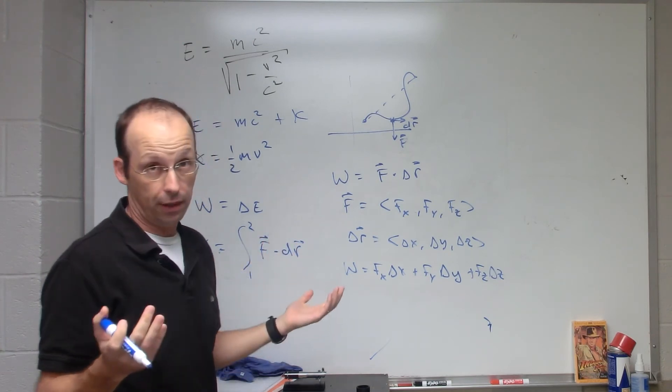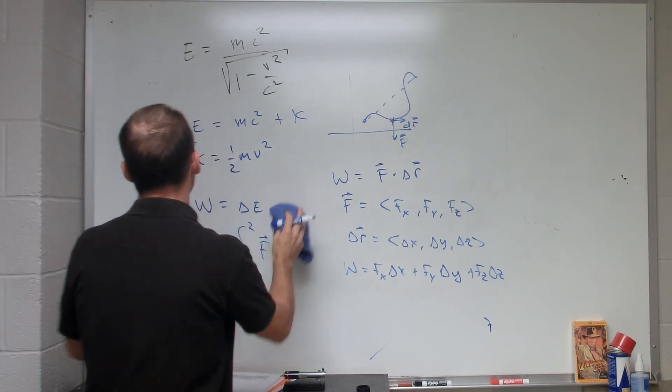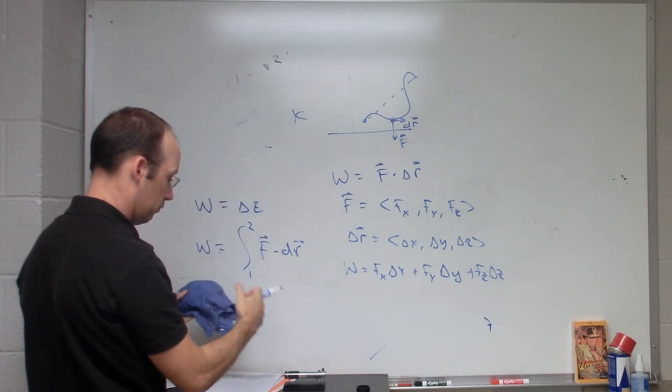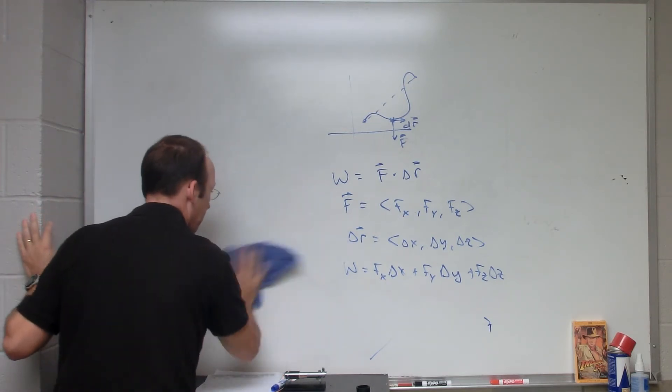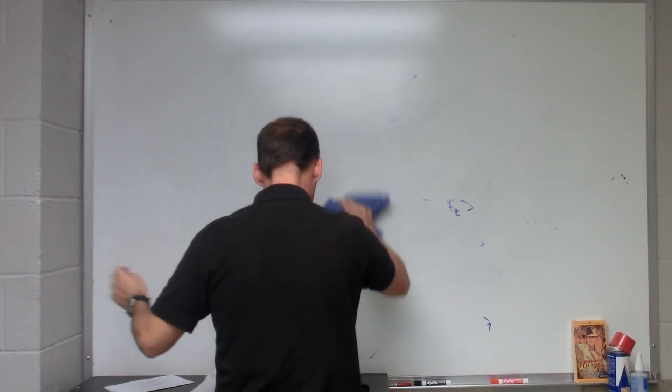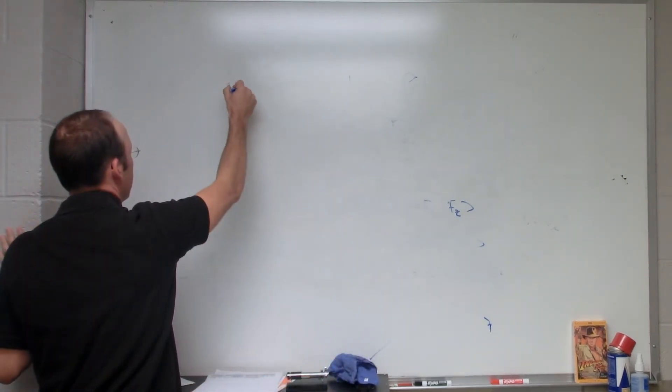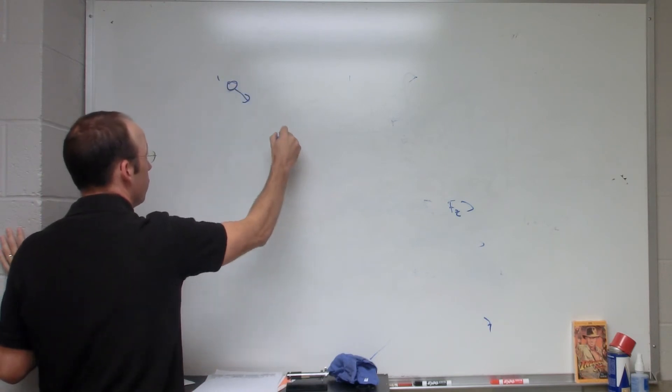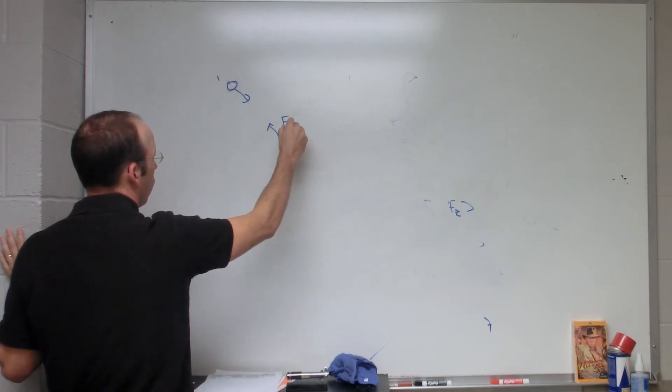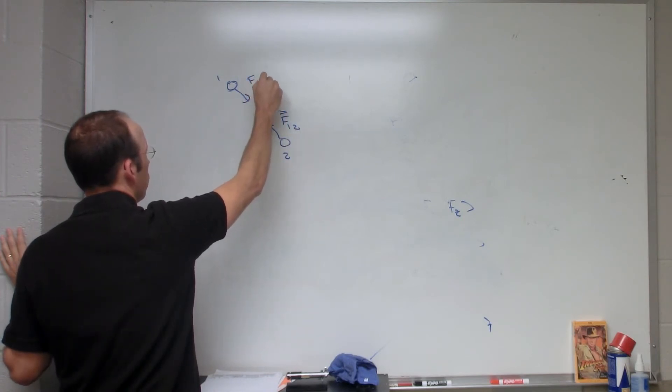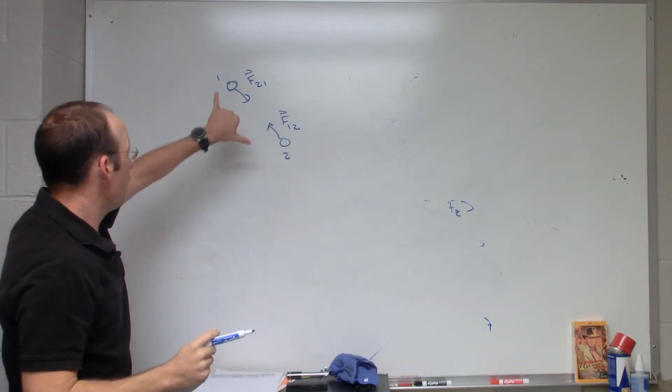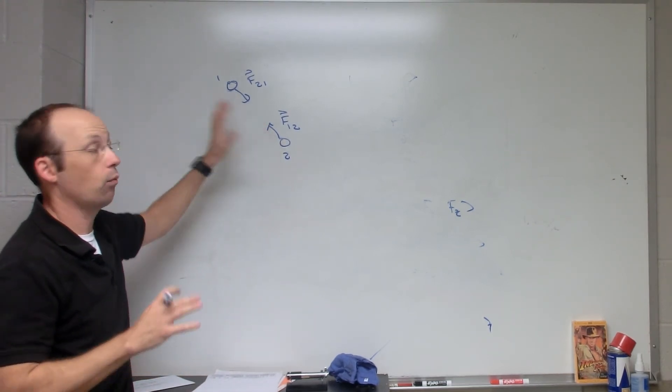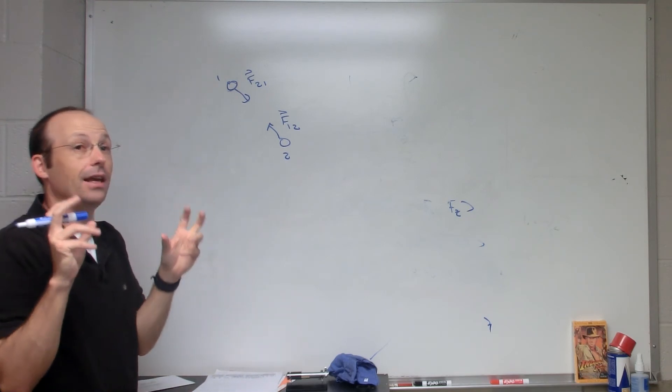But sometimes we want to have bigger systems. So if I have two balls gravitationally interacting like this, this is one, this is two. This is F one on two and this is F two on one. If I include both those balls in my system, then I have these other things that do work. It's kind of like an internal work.